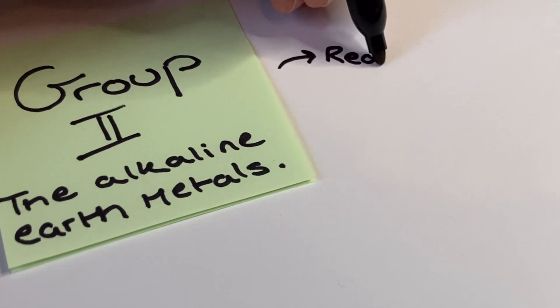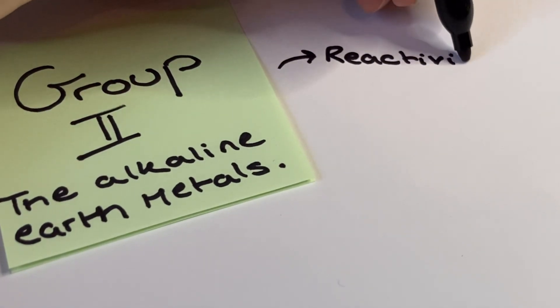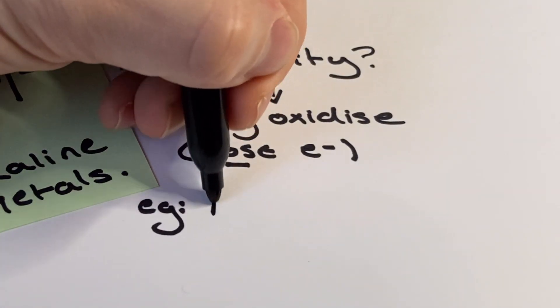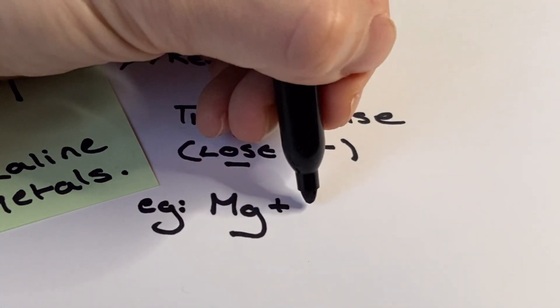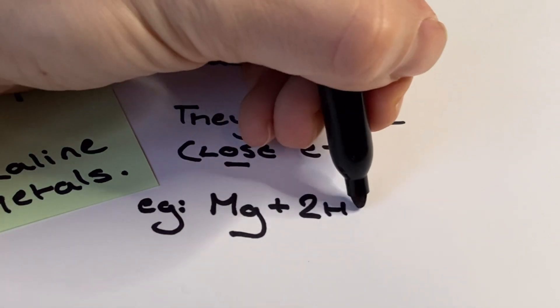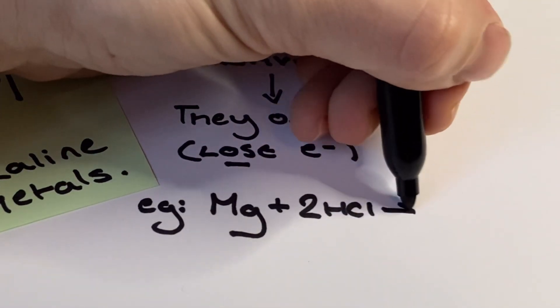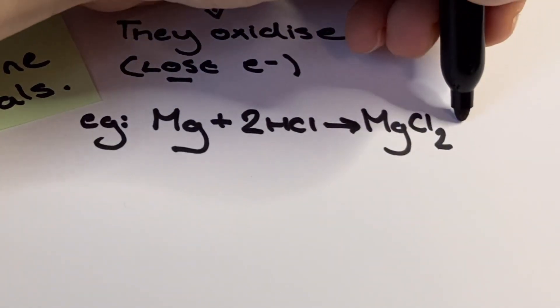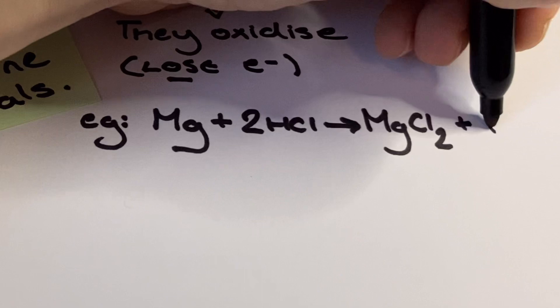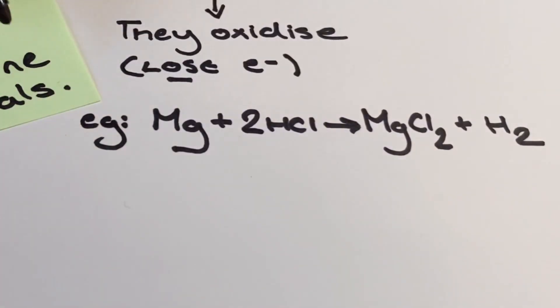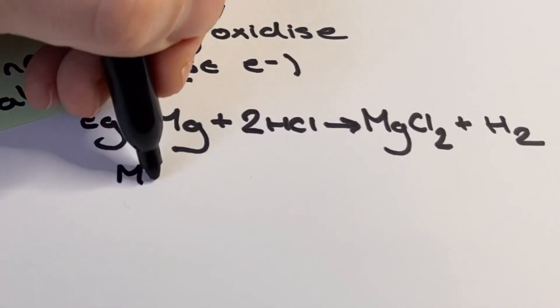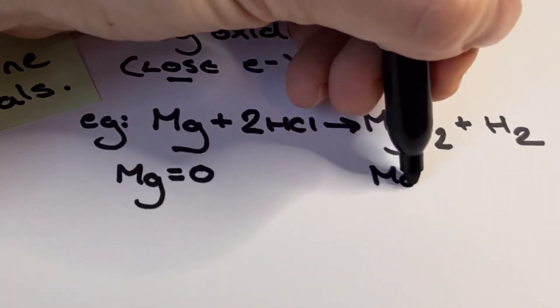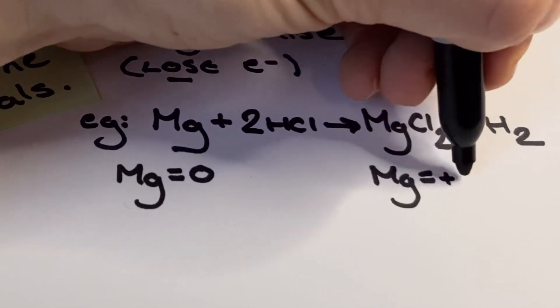When you first look at the group 2 topic it doesn't look like a lot. A few reactions, some observations to make and some application work, maybe it's not too bad. But the way it comes up in the second year papers is quite sneaky in the multiple choice and also very sudden in the redox section of the specification. I must recommend that you revise this just as much as any other part of the course and don't underestimate it, especially the applications and the trend in alkalinity of the hydroxides.